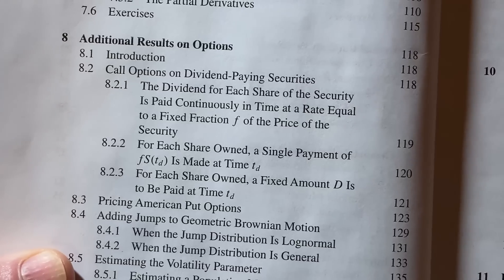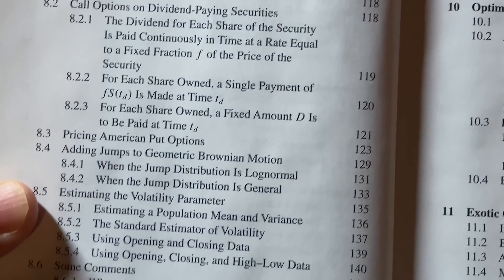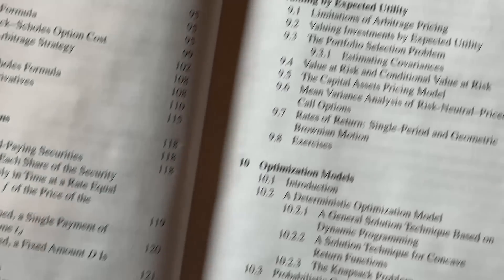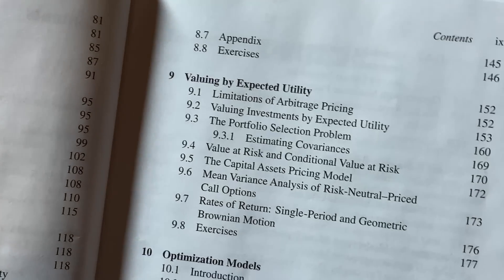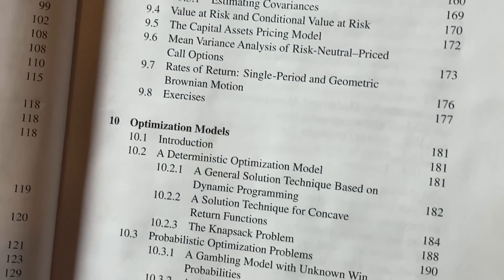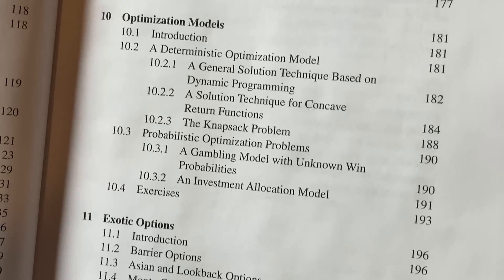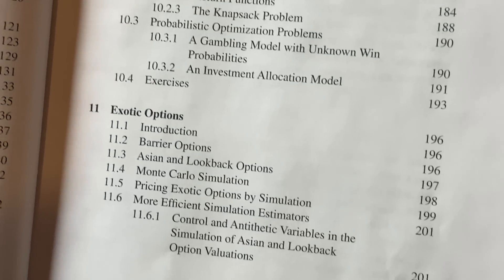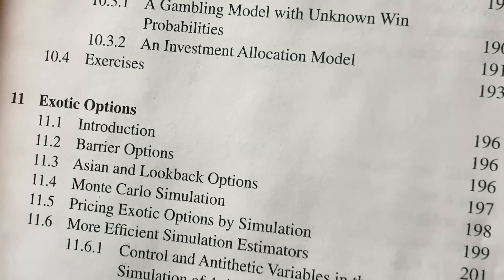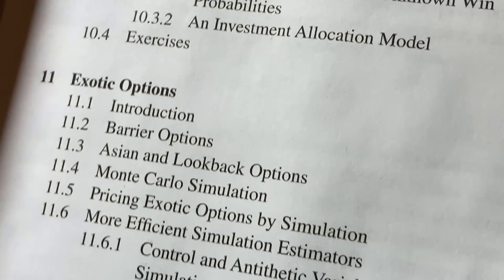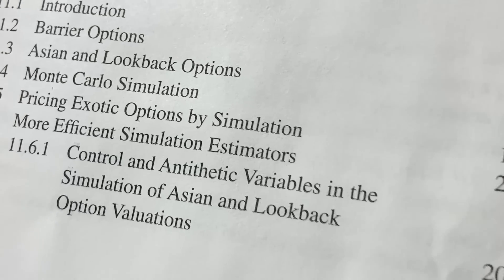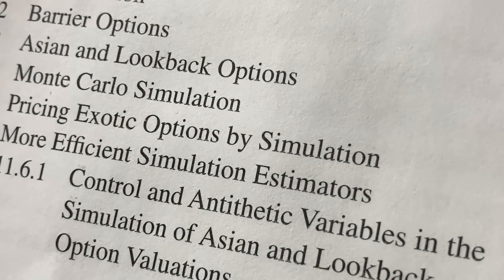There are also additional results on options — some more advanced stuff. It's really cool to have a book like this; there aren't many books like it, which makes it unique. The book is also very clean. Topics include exotic options, barrier options, Asian and lookback options, and pricing exotic options by simulation.